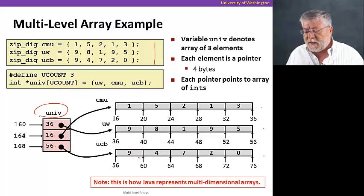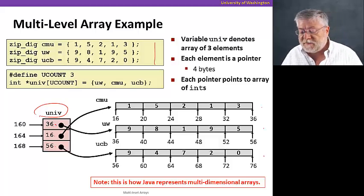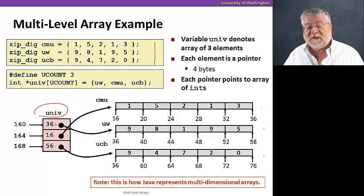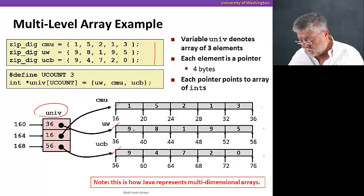So our array univ has three elements. Each one of them is a pointer. That's four bytes long. And of course, it's a one-dimensional array of pointers. So they're represented one after the other in memory. Each one of them points to an integer, basically the starting integer of the three one-dimensional arrays that we have.